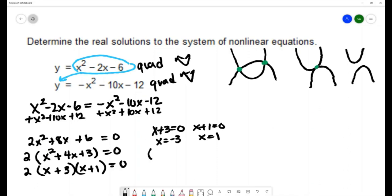to get solutions of x equals negative 3 and x equals positive 1. So I might have an ordered pair where x is negative 3 and an ordered pair where x is 1 being the solutions to the system.